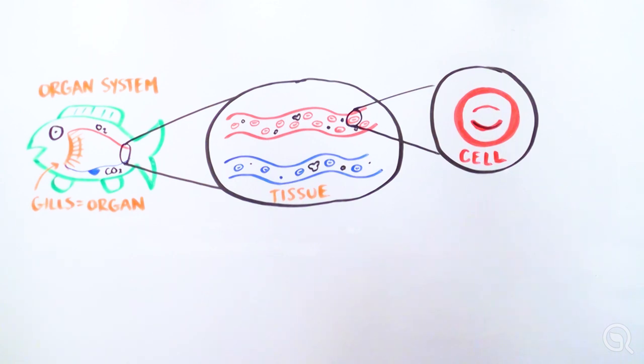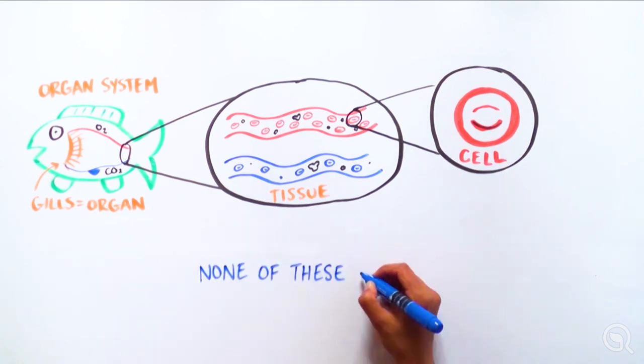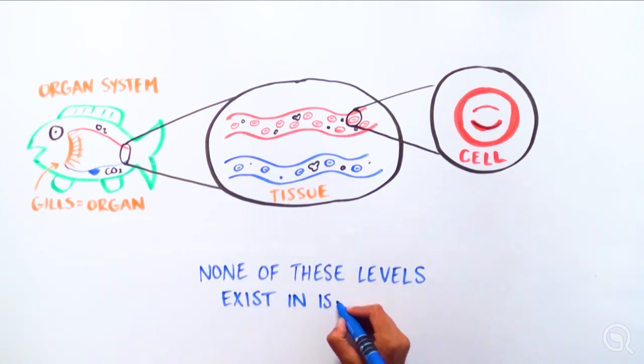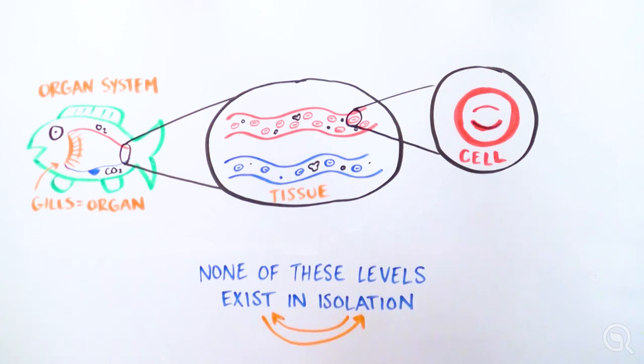All of these levels make up the hierarchy that is biological organization. While each individual unit of this hierarchy has its place and function, none of these different levels exist in isolation. From the largest to the smallest scale, everything is connected.